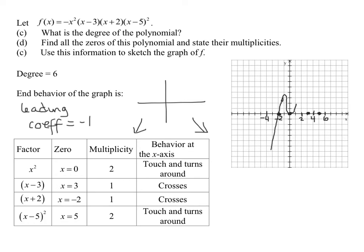So there it has touched and turned around at x equals 0. Now let's have a look at the next zero, x equals 3, it's going to cross the x-axis. So my graph has to go up and cross the x-axis. And here it goes up, it comes down and crosses when x equals 3.